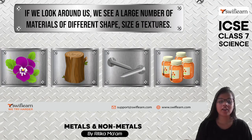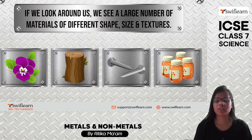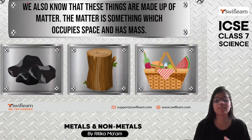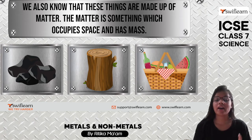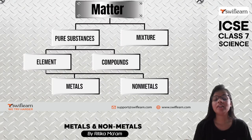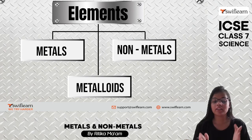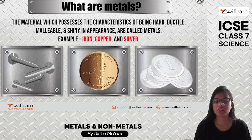Looking at our surroundings, we see a large number of materials — some big, some small, with different types of size, texture, and shape. All these materials are made up of matter. Matter is something which has mass and occupies space. Matter is classified into pure substances and mixtures. Pure substances can be classified into elements and compounds, and these elements are further classified into metals, nonmetals, and metalloids.